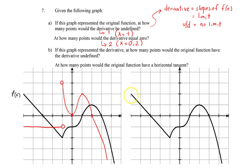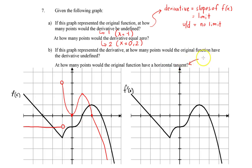Now what becomes a little tougher is when we look at this in the opposite way — this is where part D comes in. In this case, the graph represents the derivative, f prime of x. What I'm interested in is drawing the original function. I want to know: at how many points would the original function have a horizontal tangent? A horizontal tangent means a slope equal to zero.